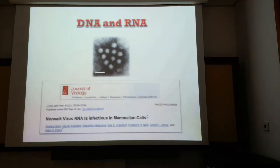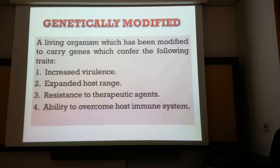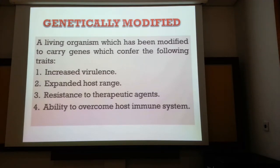Caution should be taken when working with DNA and RNA, because they represent potential infectious agents — monovirus RNA has been reported to be infectious in mammalian cells. In addition to naturally occurring infectious agents, genetically modified infectious agents represent a threat as well. Modifications which increase virulence, expand the host range, improve resistance to antibiotics, or mask antigens from the host's immune system can all lead to a potential biological threat.